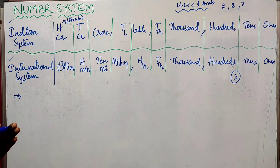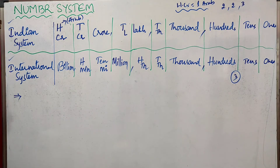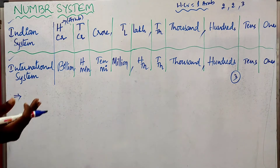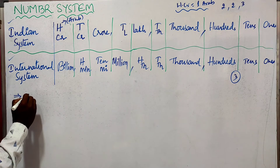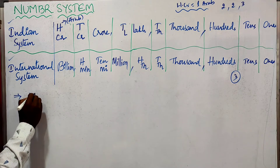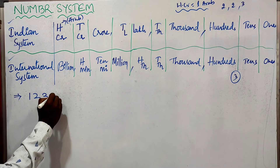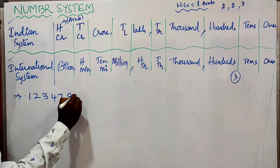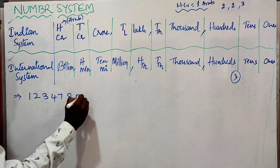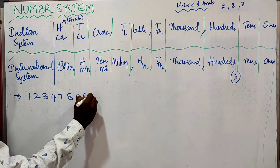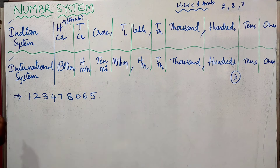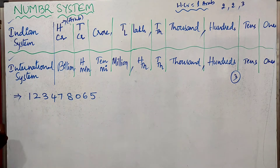First we will take a 9-digit number. The number we are considering is 1, 2, 3, 4, 7, 8, 0, 6, 5 — that is 123,478,065. We will try to read this number in the Indian system and international system of numeration.